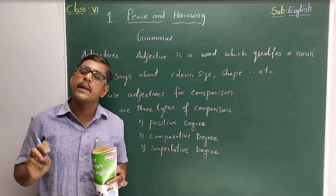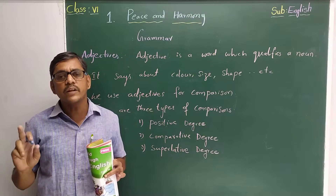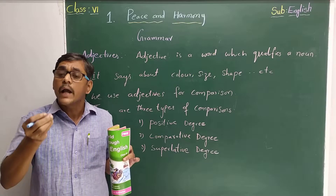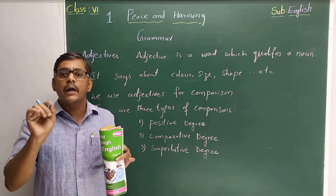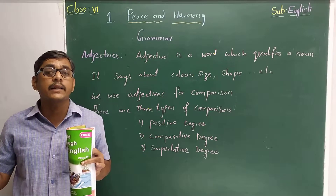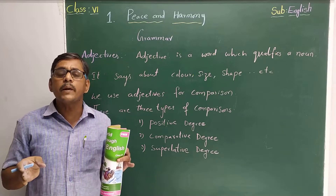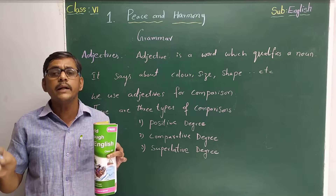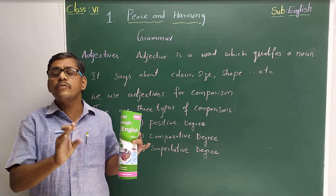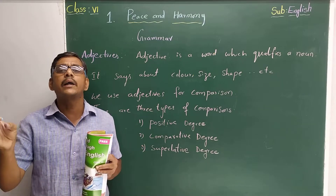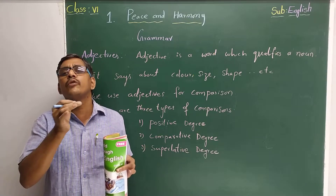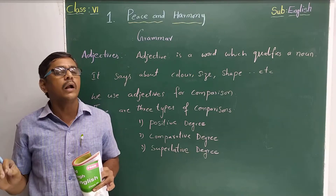The second one is the pronoun. Pronoun is the word which we use instead of a noun. For example, Ravi is a student. Instead of saying again 'Ravi is studying in the eighth class,' we simply say 'Ravi is a student. He is studying in eighth class.' So instead of Ravi, the second time I used 'he.' So 'he' is the pronoun there — the word which we use instead of a noun is called a pronoun.